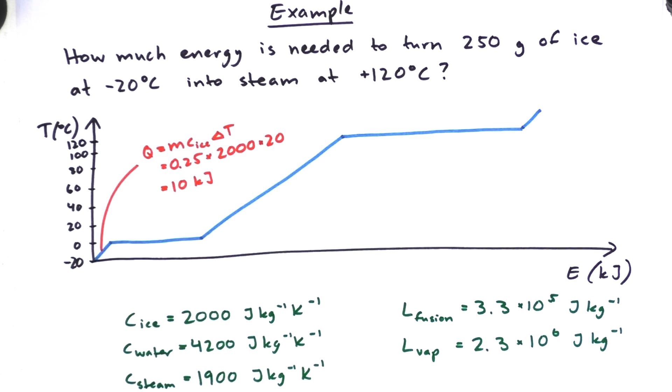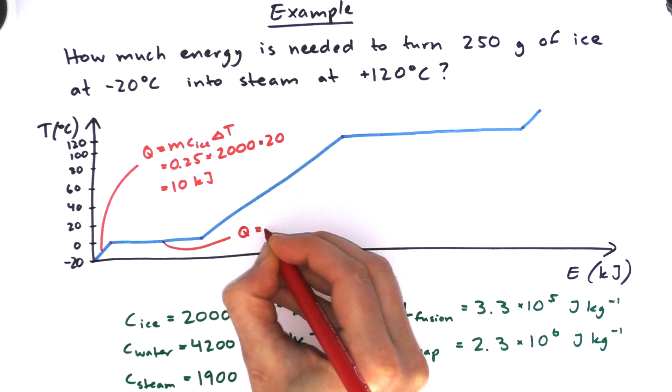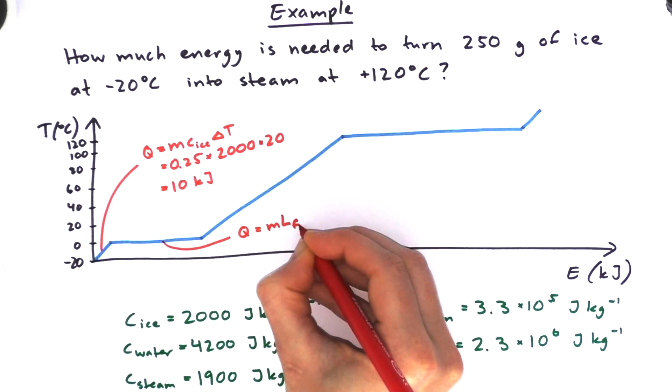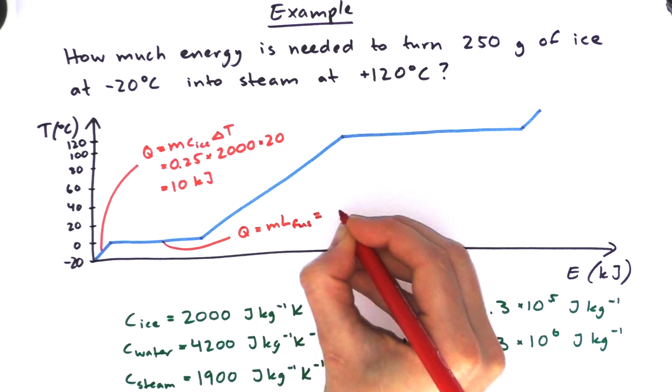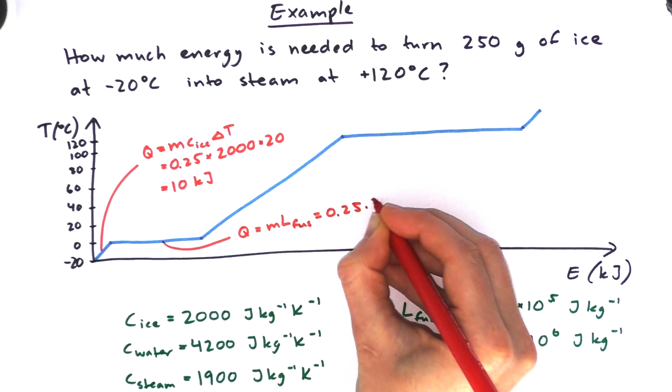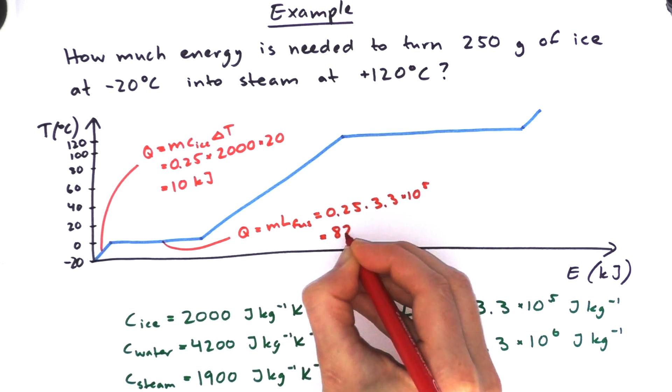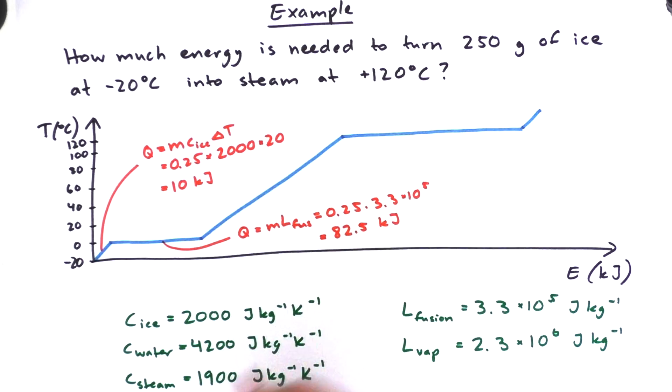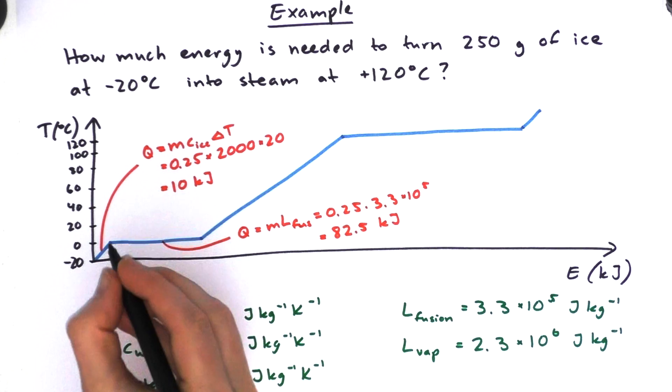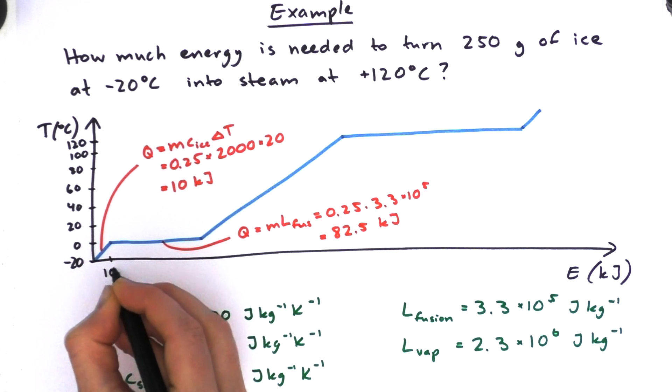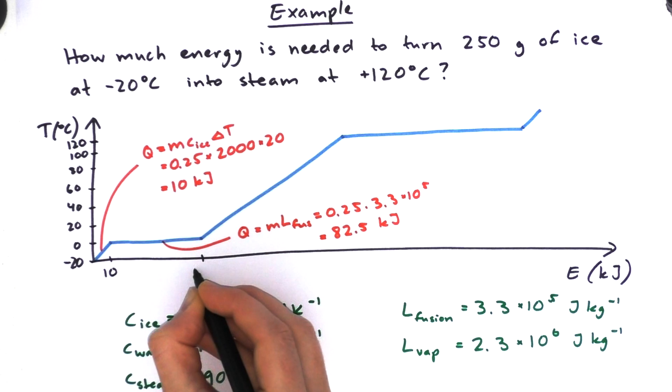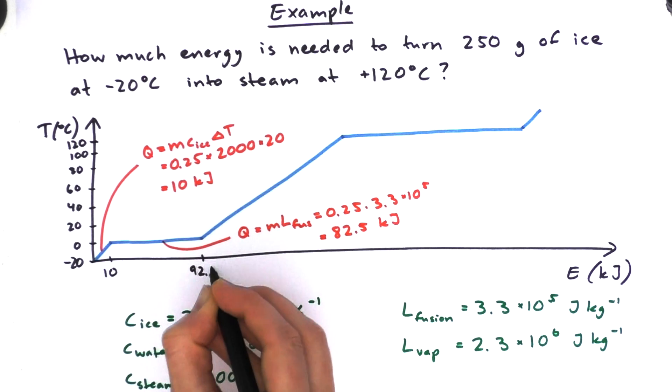And the next thing we're going to need to do is to melt that ice. And we can use our latent heat equation for that. So Q equals ML and we have all of the values. We just plug them in and we get 82.5 kilojoules. So so far we've used up 10 plus 82.5 kilojoules. We'll do the rounding at the end, by the way. So all together we have 92.5 kilojoules.